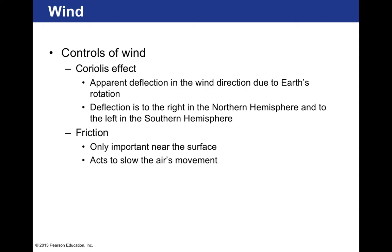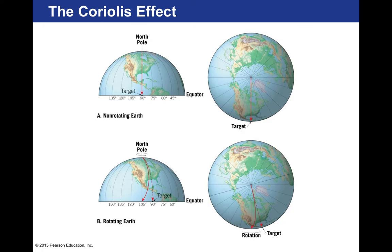One effect that controls wind is the Coriolis effect — the apparent deflection of wind due to the Earth's rotation. The deflection is to the right in the northern hemisphere and to the left in the southern hemisphere. We also have friction, which is only important near the Earth's surface, acting to slow the air's movement. Imagine standing at the North Pole and throwing a baseball — the rotation of the Earth would cause the ball's trajectory to curve because the continents are moving as the ball travels. This is the apparent deflection of anything that moves with respect to the Earth's rotation.